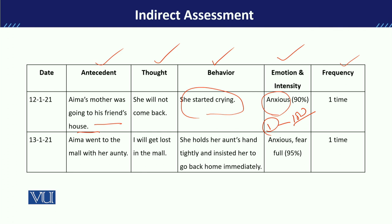This thought pattern was identified as the reason her behavior of crying started and her emotion became anxious. After that, on another day, Ima went along with her aunt to the mall. At the mall, she was repeatedly thinking that she would get lost inside the mall.